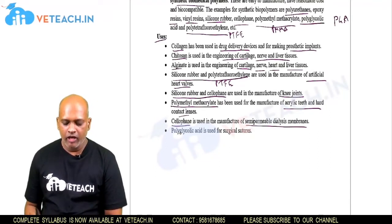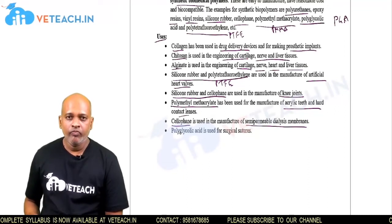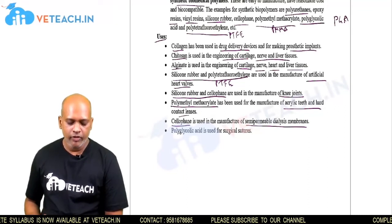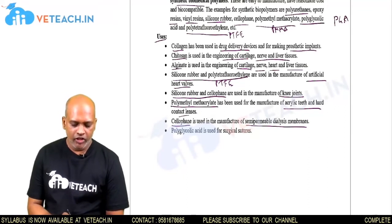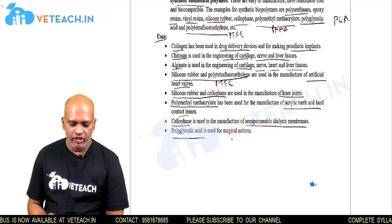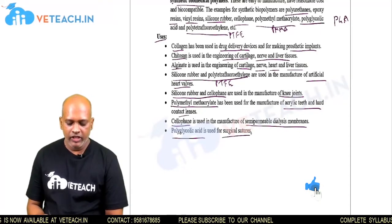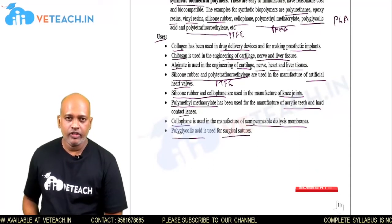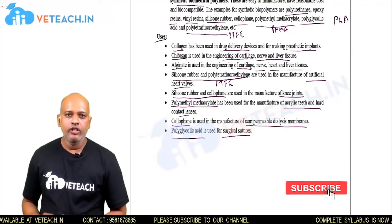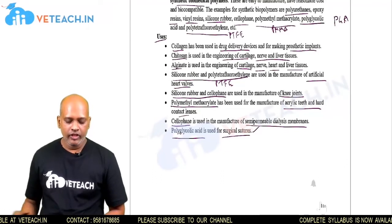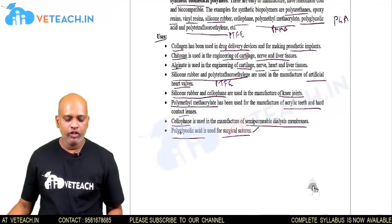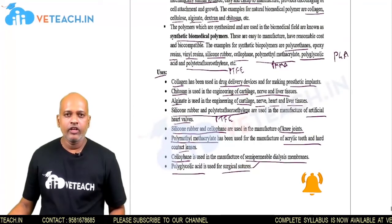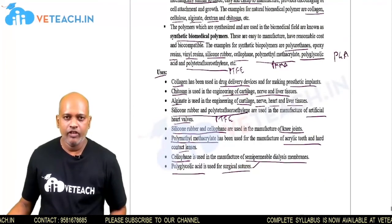Cellophane is a biomedical polymer used in manufacturing semi-permeable dialysis membranes for kidney patients. Polyglycolic acid (PGA) is used in manufacturing surgical sutures. This concludes the topic of biomedical polymers. We will continue in the next session. Thank you very much.